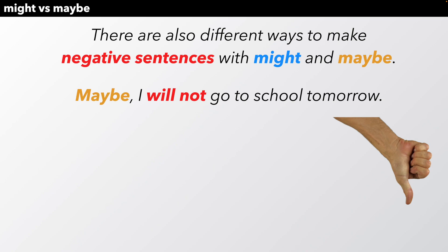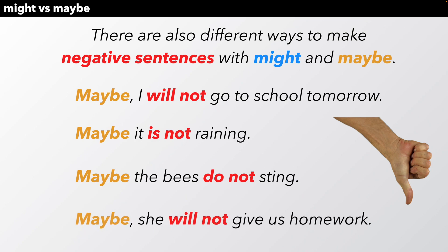This time, the negative part not is used away from the word maybe. Maybe is left alone. Maybe it is not raining. Maybe the bees do not sting. Maybe she will not give us homework. With the word maybe, you can just make a regular negative sentence and put maybe at the beginning.